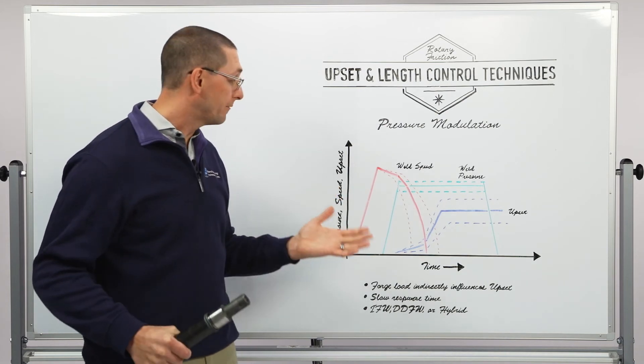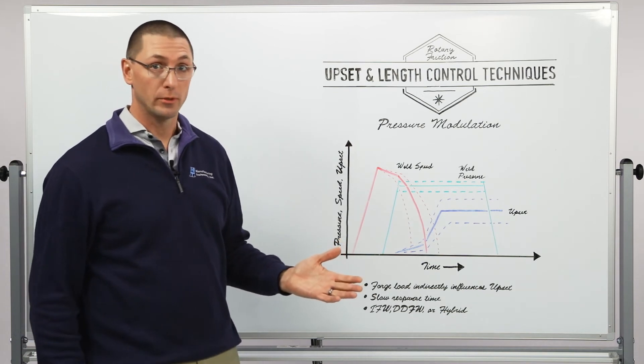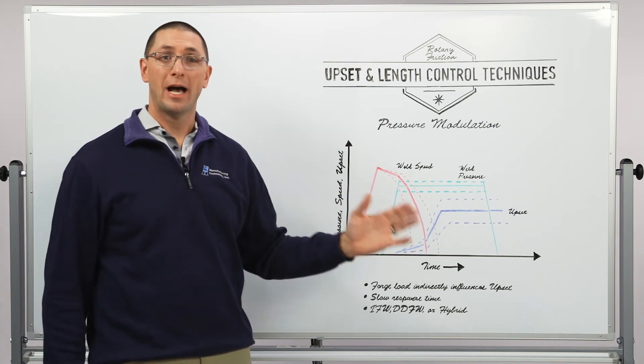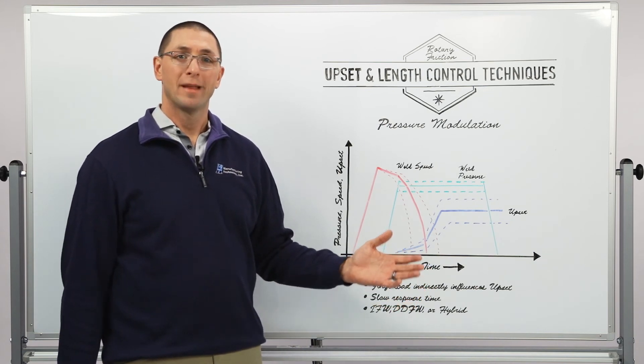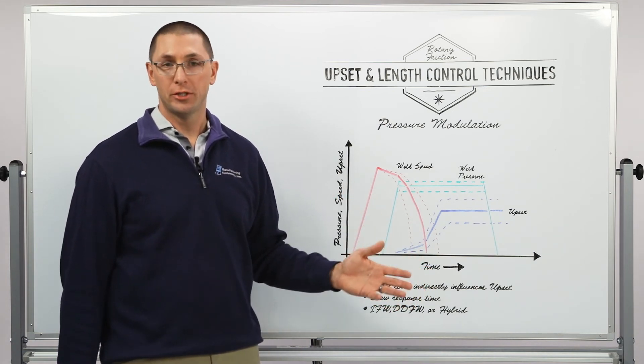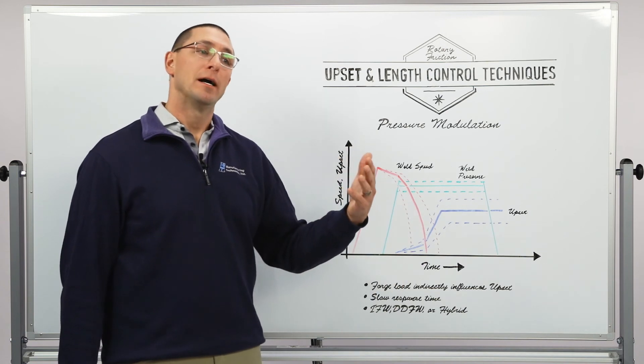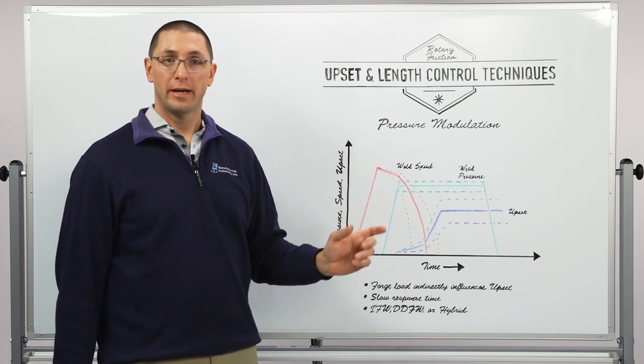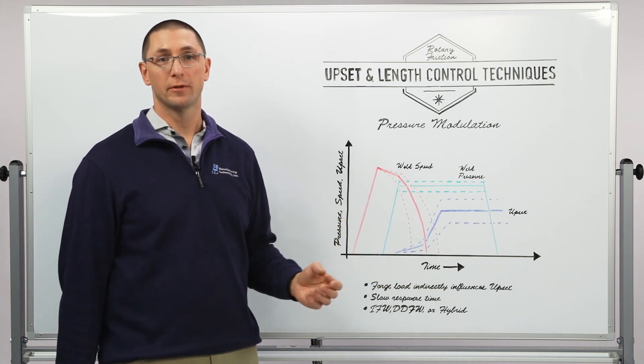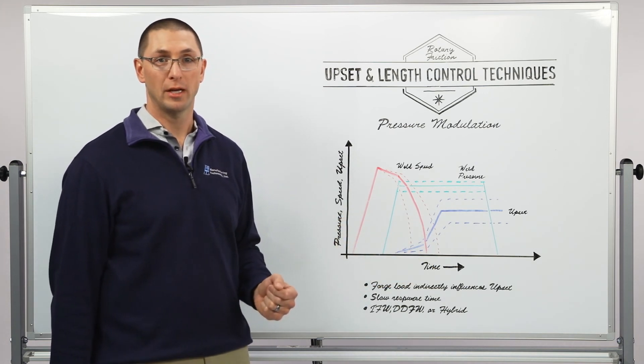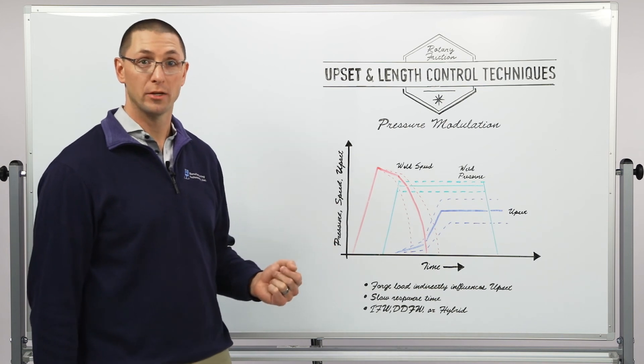Now this is an effective technique. It works for upset control, but because the hydraulic system of a machine responds very slowly, I don't get a whole lot of adjustments. Therefore, my repeatability still has an error band associated with it. In addition to that, the tooling that I'm using can also affect how easy it is to measure the upset as a result of pressure changes.